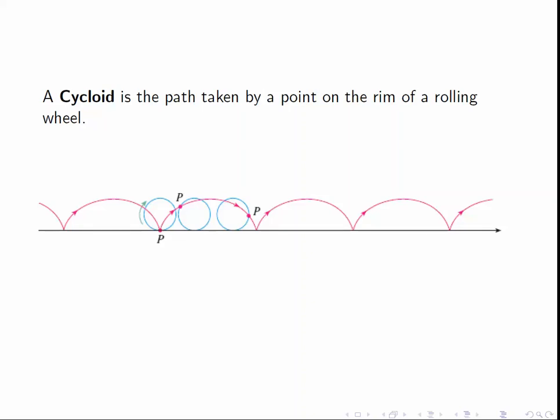The easiest way to see a cycloid in action is to paint a little white dot on the wheel of your bicycle and roll it along the ground. The path taken by that little white dot will be exactly the set of these little arches like this.